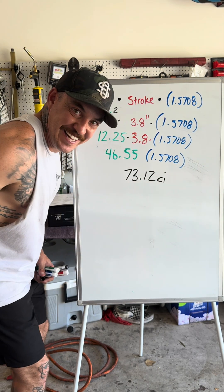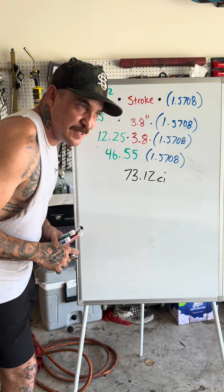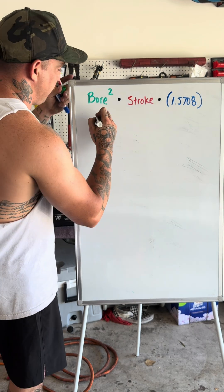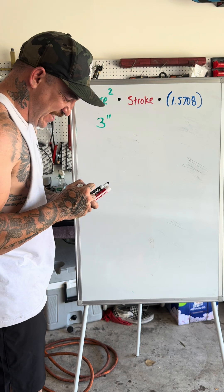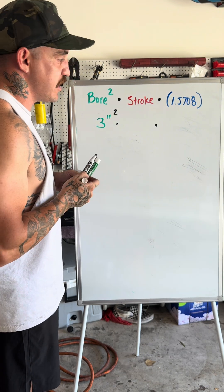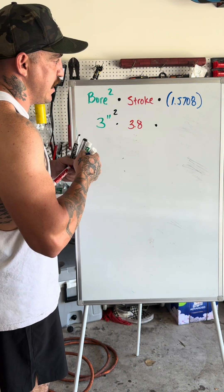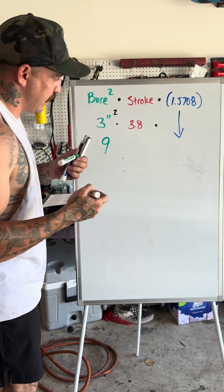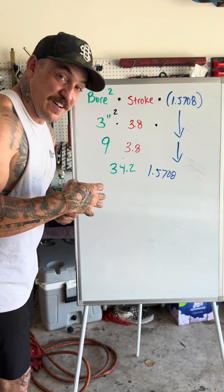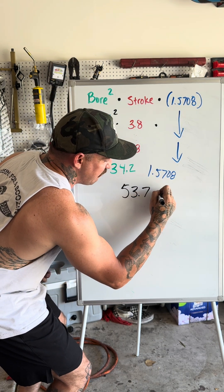So a Sportster 1200 — you've got a 73 to 74 cubic-inch motor. Let's do an 883. An 883 has a bore of three inches. That number is going to get squared, multiplied by the stroke — the stroke stays the same at 3.8 inches — and then we bring down the constant. An iron 883, you've got a whopping 53.7 cubic inches.